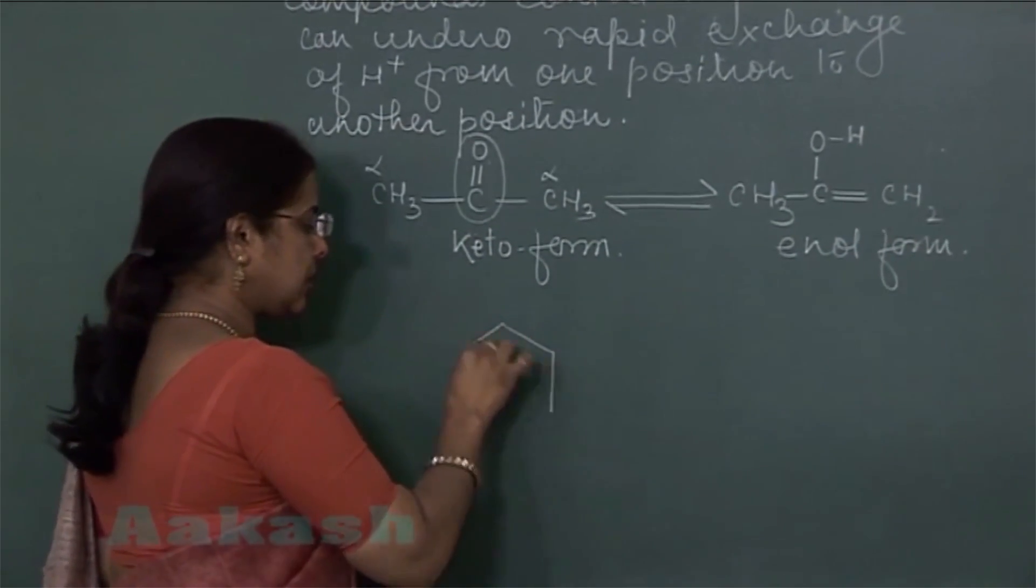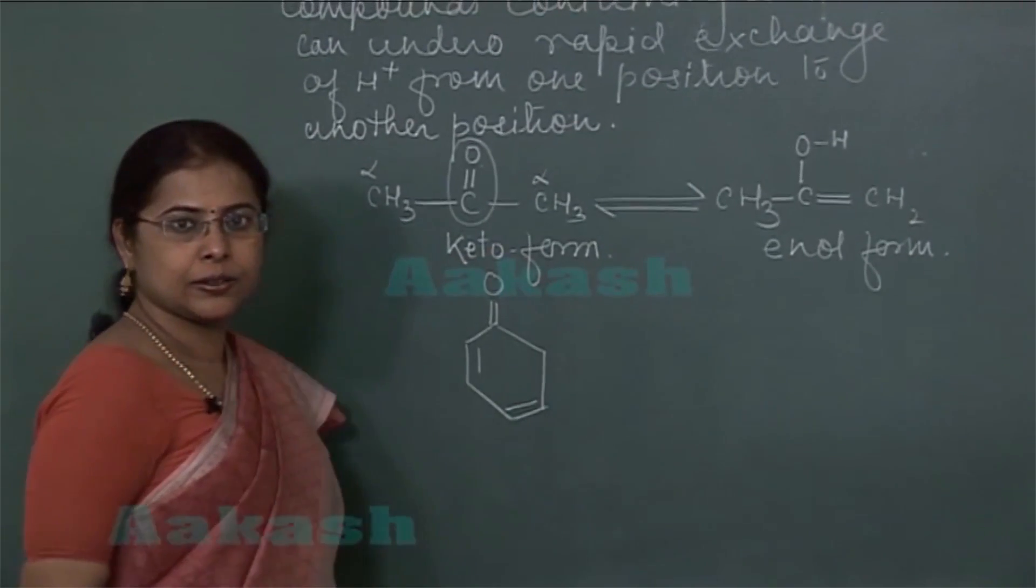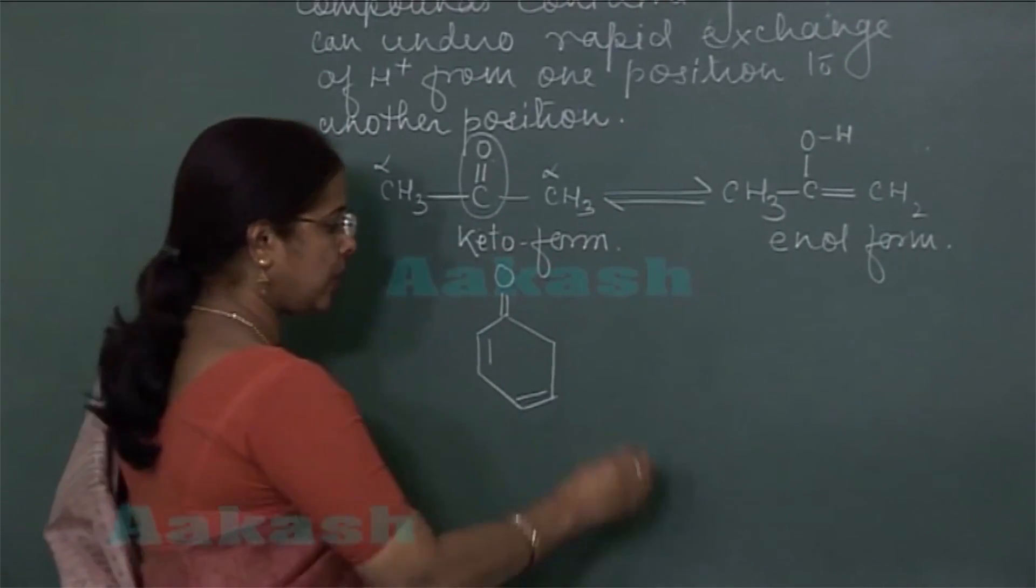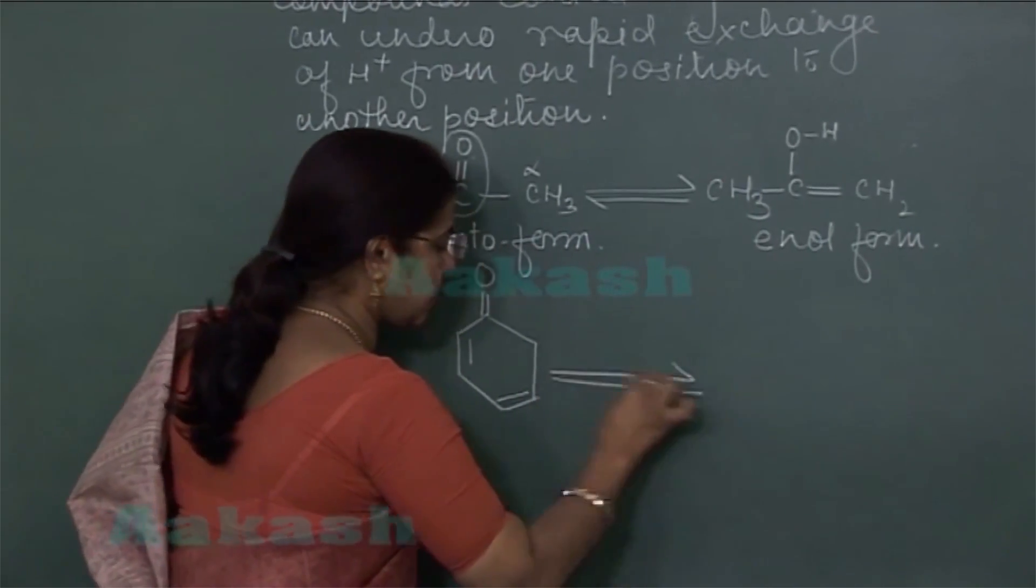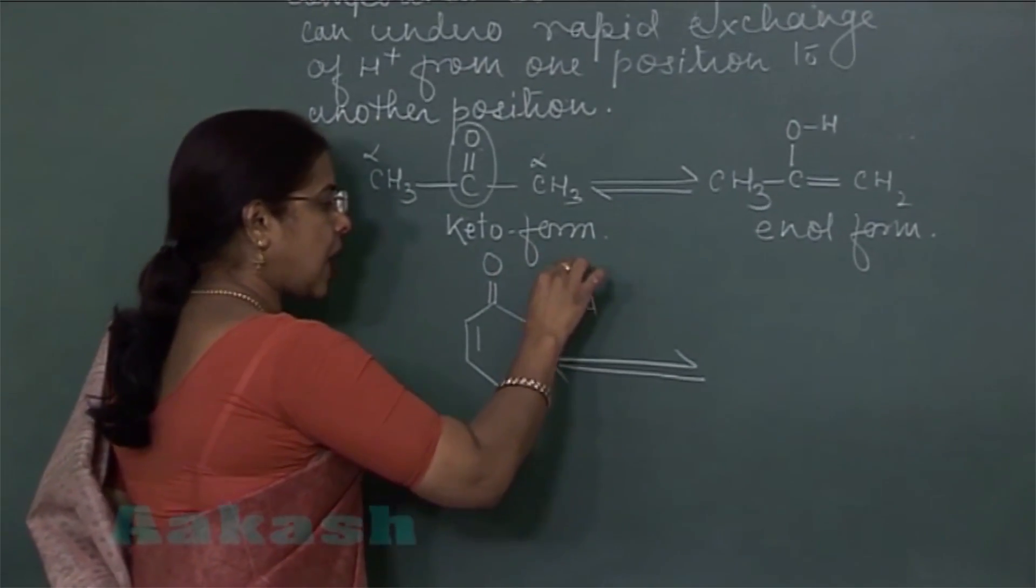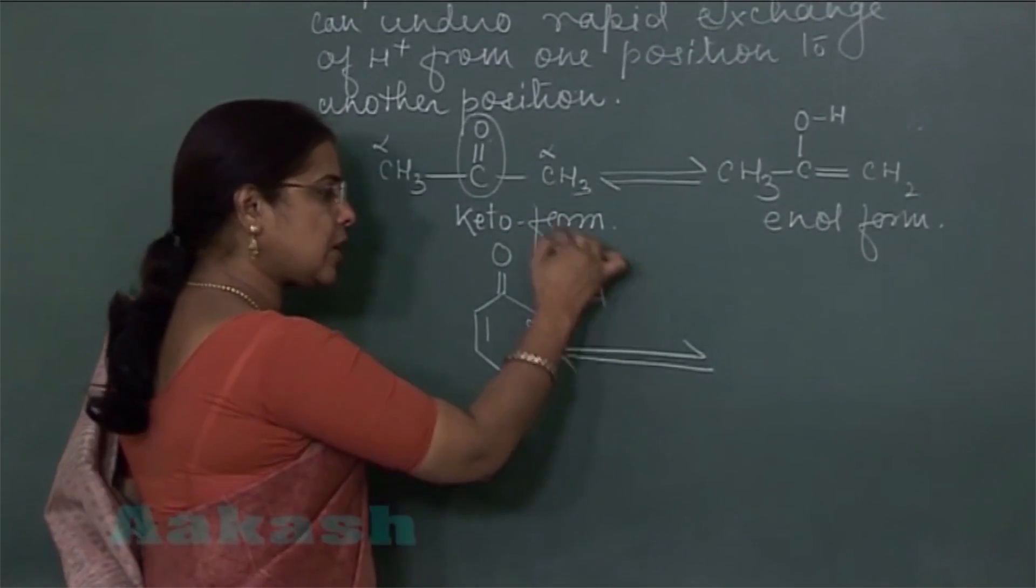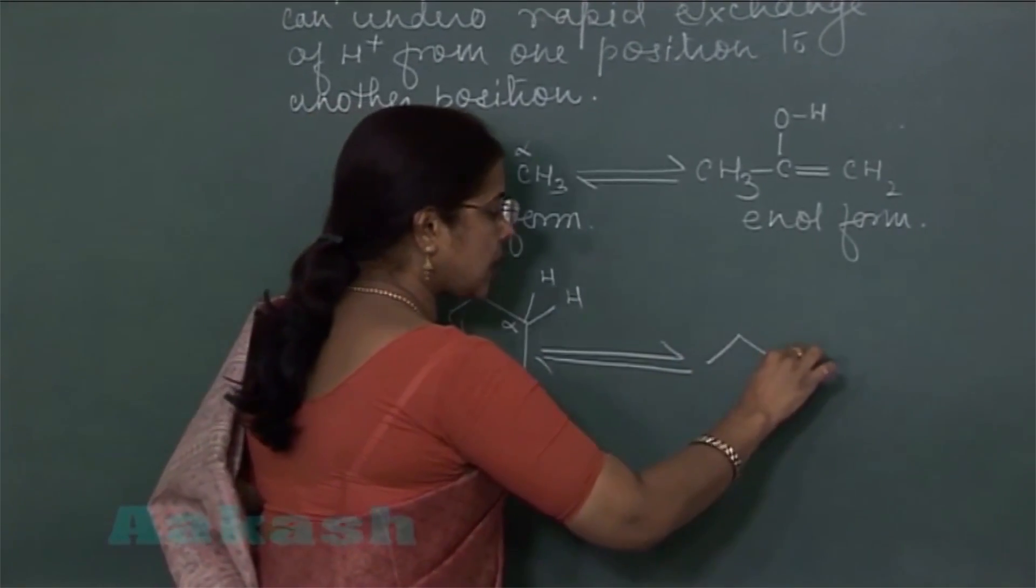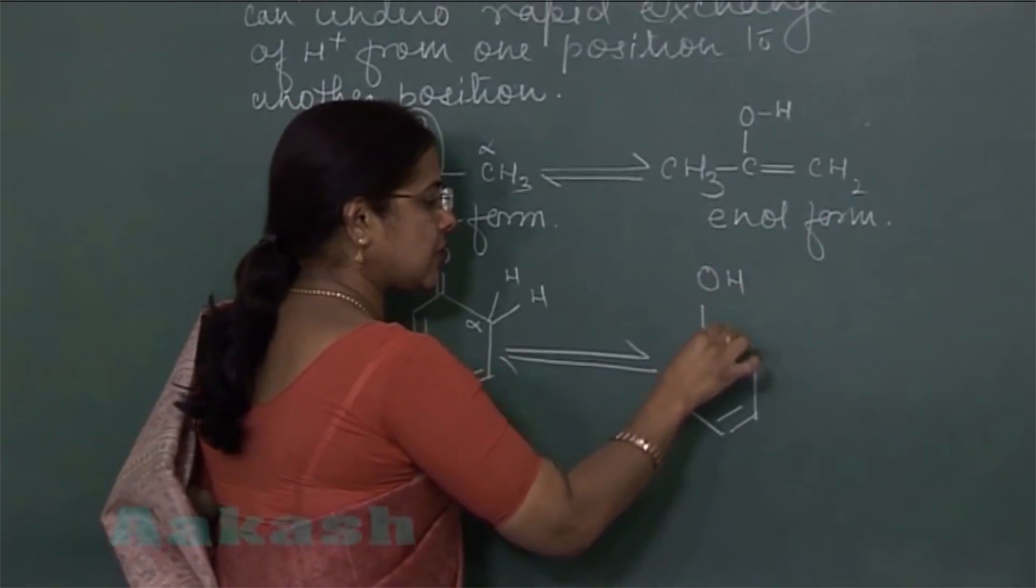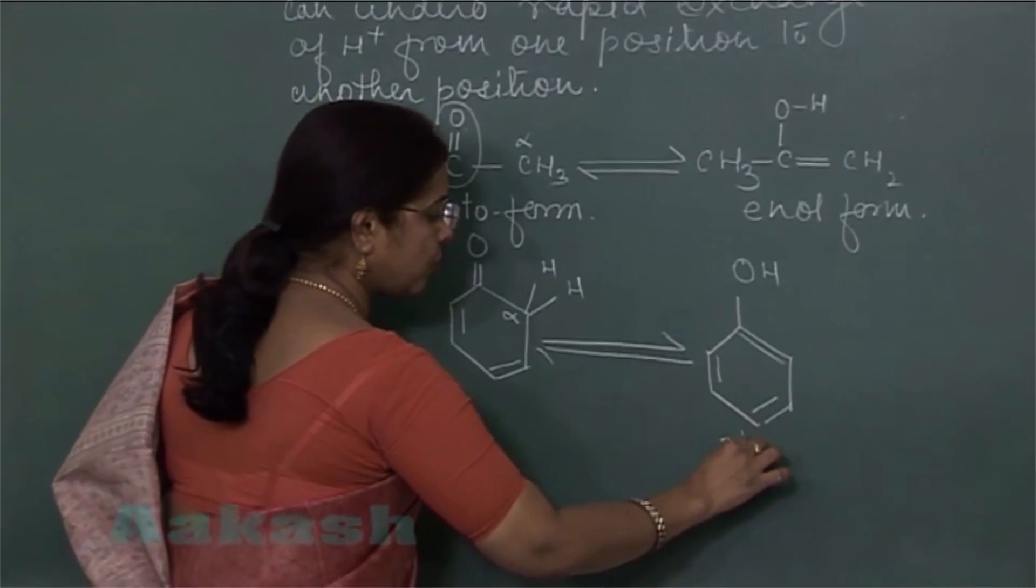See one more example. Let's take a compound. This compound is an unsaturated cyclic ketone. Now see in this structure, there is presence of alpha hydrogen atoms. At the alpha position, two hydrogen atoms are present. So from here, one alpha hydrogen atom can shift to this carbonyl group. And with this shifting, formation will occur of aromatic alcohol which is called phenol.